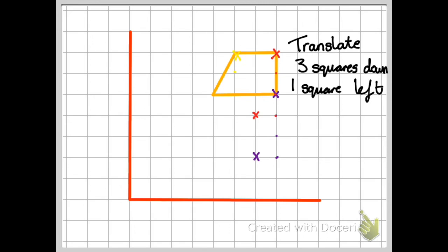And I'll use a different color for the other vertex. So here it is, one, two, three down, one to the left. And then finally the last vertex, one, two, three down, one to the left.